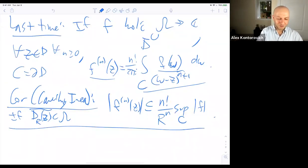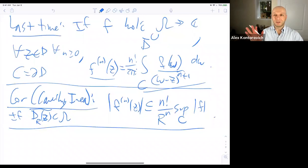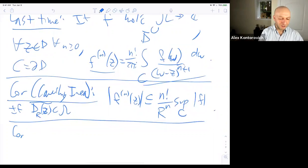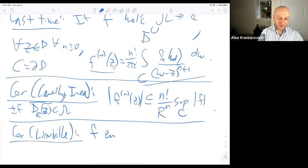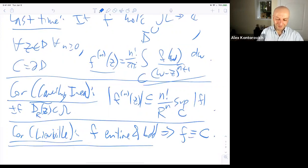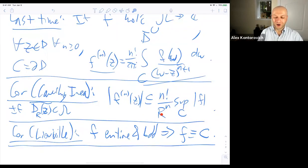From Cauchy's inequality, we proved Liouville's theorem: f entire and bounded implies f is a constant. The proof is to take n equals 1, giving a bound of 1 over r; send r to infinity, the derivative is 0 everywhere, so the function is constant.